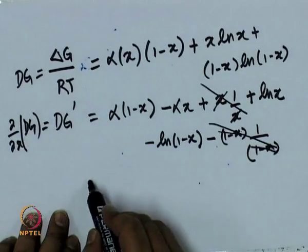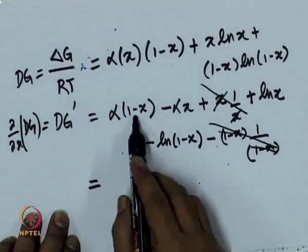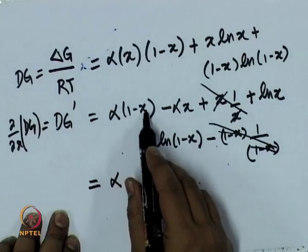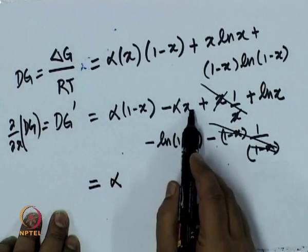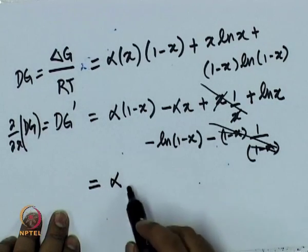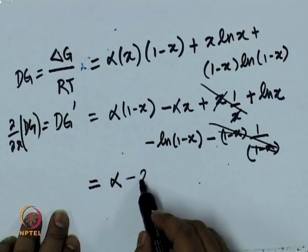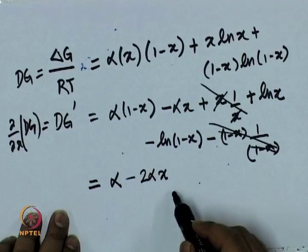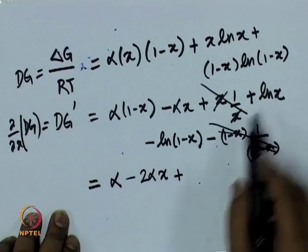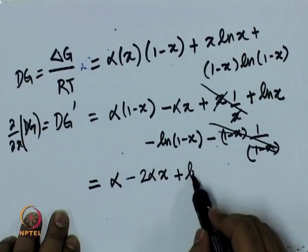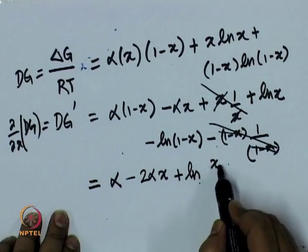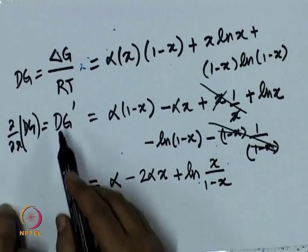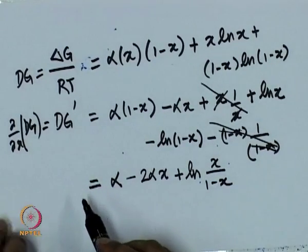So what do we have? We have alpha, alpha*x, and another minus alpha*x, giving minus 2*alpha*x, plus log(x/(1-x)). So this is the first derivative dg prime.